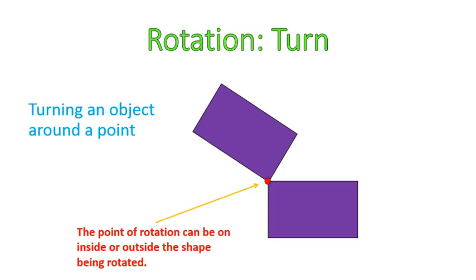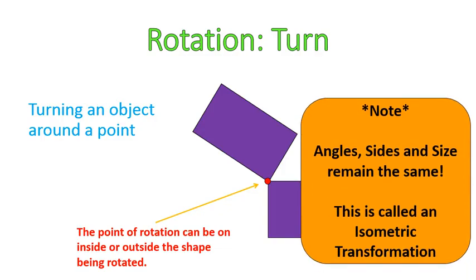If it's in the middle of the shape, it'll look like the shape's just spinning around. If it's outside the shape, it'll look like the shape's kind of moving in an arc. So the point of rotation can be inside, outside, or on the edge or a vertex of the point, of the figure, in this case, a rectangle.